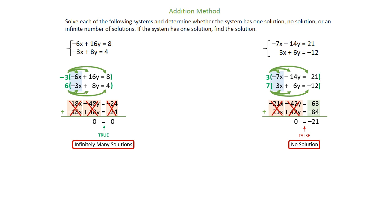So reviewing, on the left-hand side of the screen, when you added those two equations together, everything canceled and it became a true statement. And on the right-hand side of the screen, when you added everything together, the left-hand side with all the variables canceled, but there was still a constant left over. In that case, it's false and no solution.